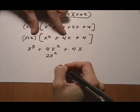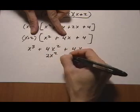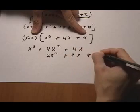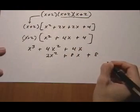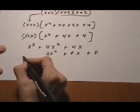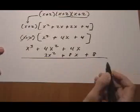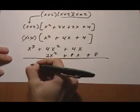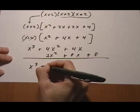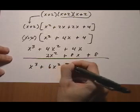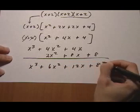2x², 2 times 4x is +8x, 2 times 4 is +8. We're done with the distributing. Collect like terms for the final answer: x³ + 6x² + 12x + 8.